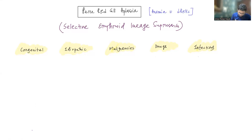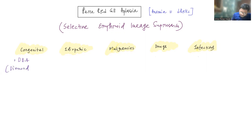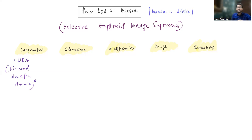Now let us see what are the etiologies that can cause this condition. Among the congenital conditions, one of the most important diseases to remember is Diamond-Blackfan anemia. This condition is associated with pure red cell aplasia and is grouped under ribosomal biogenesis disorders. The most commonly mutated gene is RPS19, which is involved in the process of ribosome synthesis.